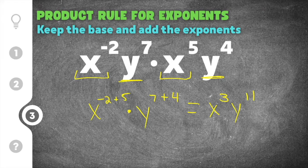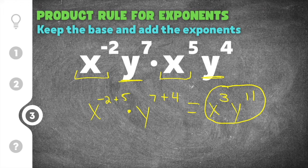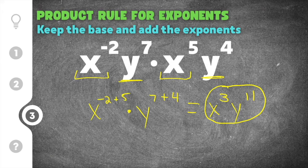So our final solution to this product rule for exponents problem is x to the third y to the eleventh, because you keep the base the same and you add the exponents.